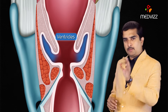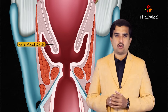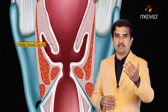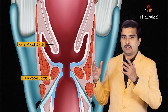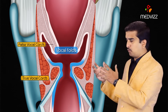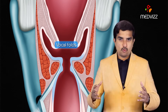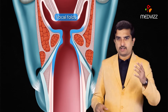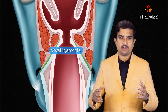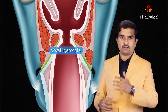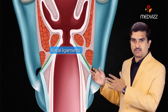The ventricles are the portion between the false vocal cords superiorly and the true vocal cords inferiorly; they form the vocal folds. The vocal folds contain the vocal ligaments, which are thickenings of the superior edge of the conus elasticus.